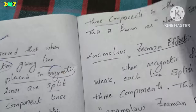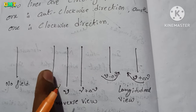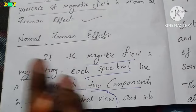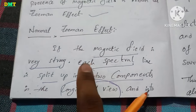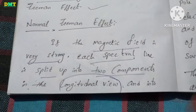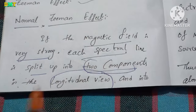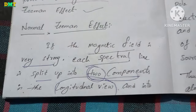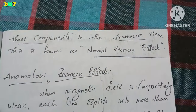Second point: in the transverse view, each spectral line splits into three components. So, for the Normal Zeeman Effect: in the longitudinal view, each spectral line splits into two components; in the transverse view, it splits into three components. That is the Normal Zeeman Effect.